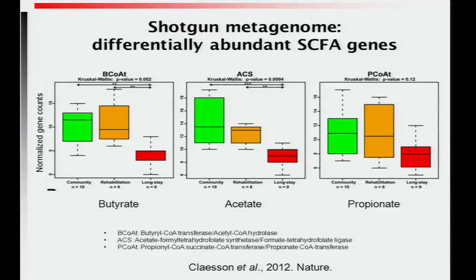To generate short chain fatty acids, you need the substrate — i.e., fiber — and you also need the microbial functionality. So is it simply reduced fiber that leads to reduced short chain fatty acid production? We also see a reduction in marker genes for the production of butyrate, acetate, and propionate. For butyrate and acetate, this reduction is significant; for propionate it's just a trend. But this makes sense based on the previous plot, where butyrate and acetate were much more strongly associated with the community than propionate.